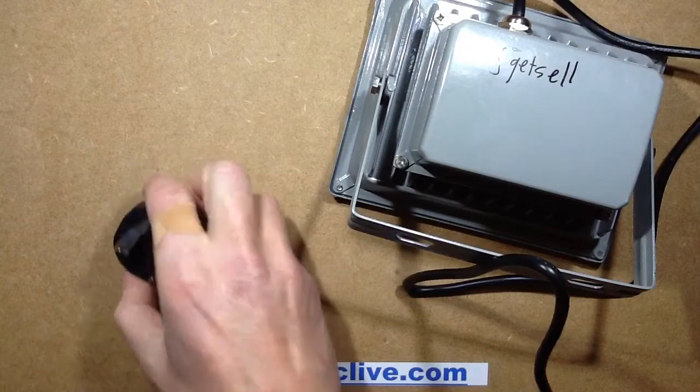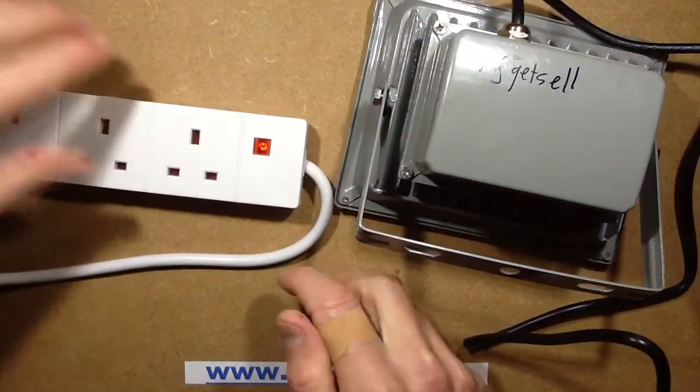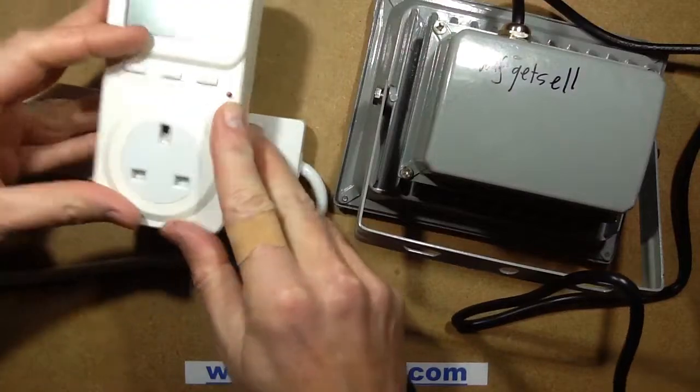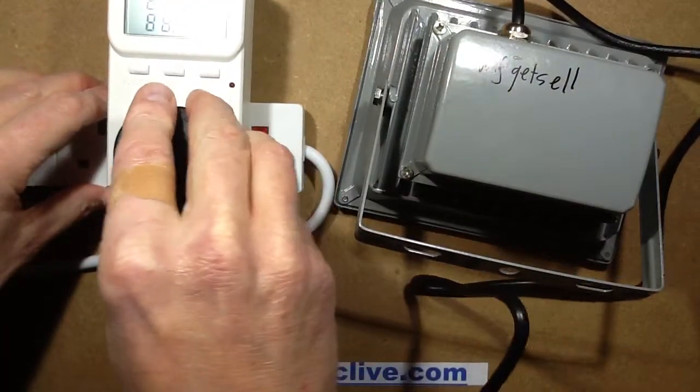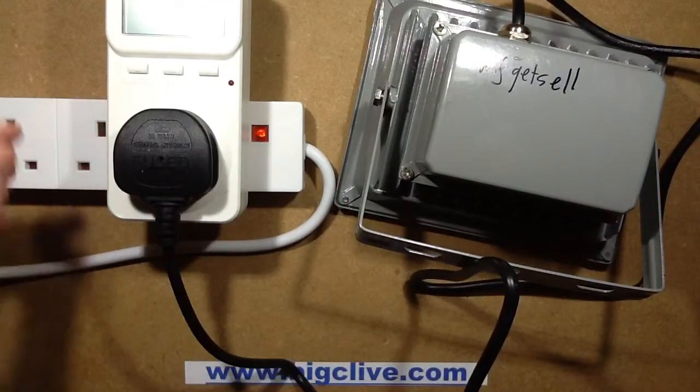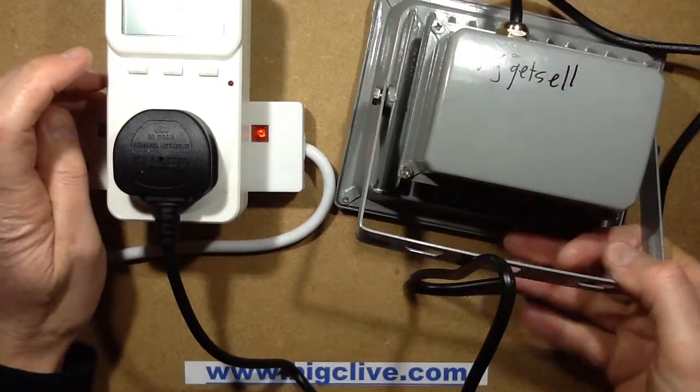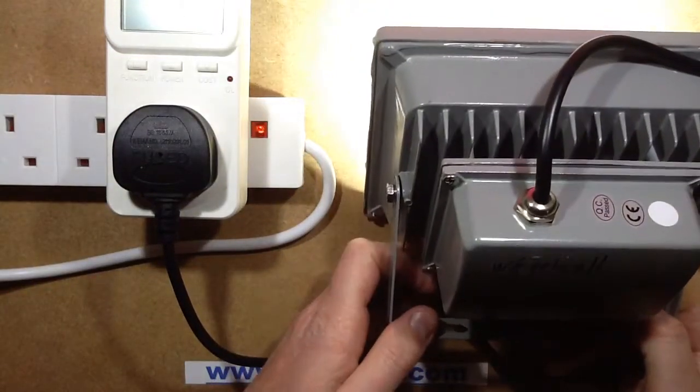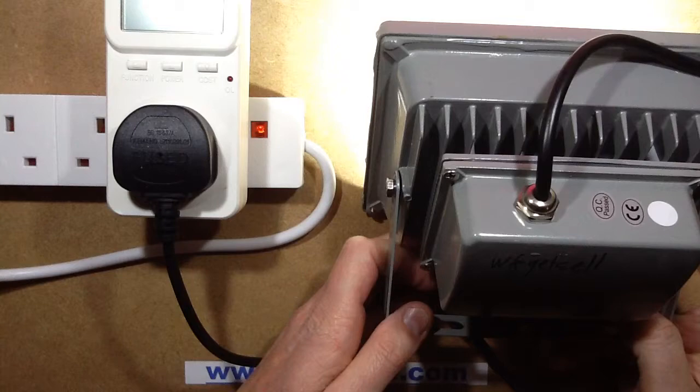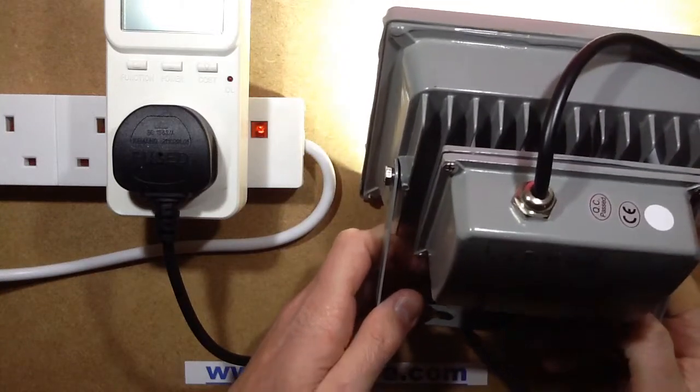And when I plugged it into a meter, cue the power meter, it didn't go bang and it shows as 19.2 watts. So that's not bad for a 20 watt light.